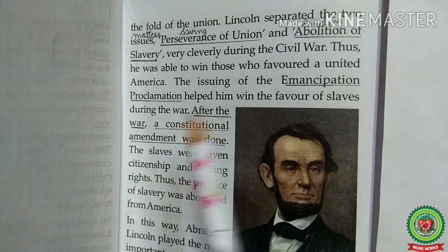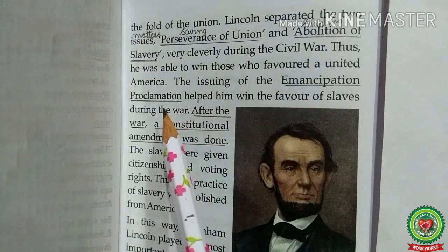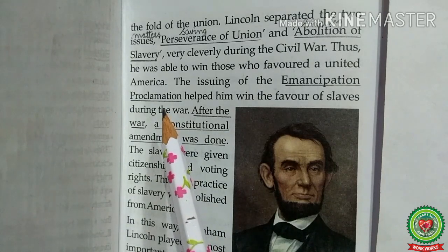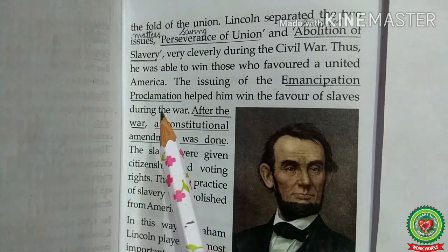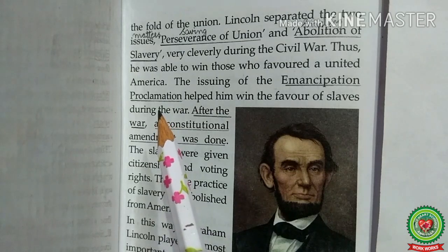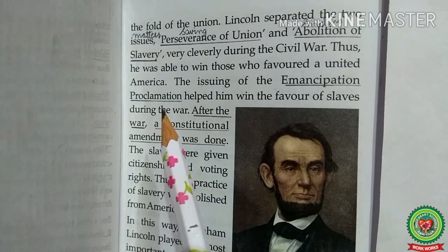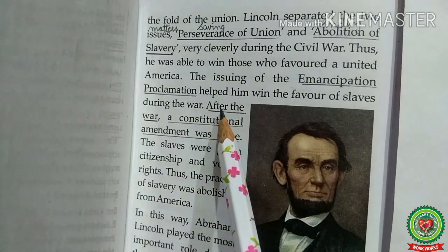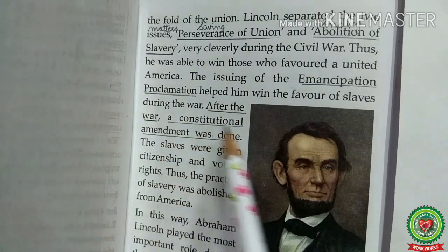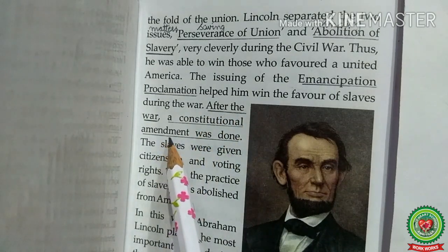The Emancipation Proclamation was an order given by President Abraham Lincoln to free the slaves from legal, political, and social restrictions. It was issued in January 1863, as the nation approached its third year of civil war. The Proclamation declared that all persons held as slaves within the rebellious states are, and henceforth shall be, free.